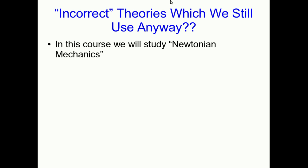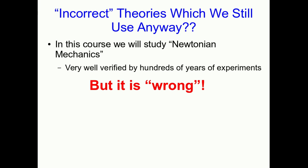Now, surely it would be unscientific to keep using theories if we knew that they were incorrect. Well, sometimes you'd be surprised. In this course, we're going to study a lot of different theories, but they all sort of fit together into one big theory called Newtonian mechanics. Newtonian mechanics is extremely well verified by hundreds of years of experiments. But I hate to tell you this. It's wrong. It's wrong.